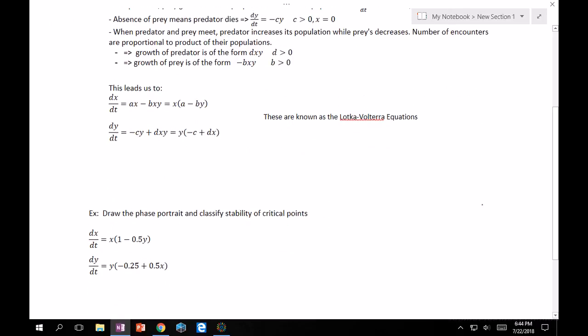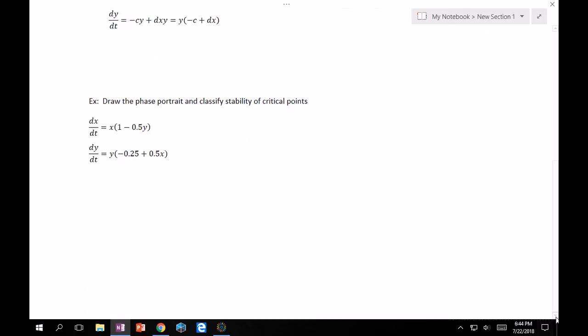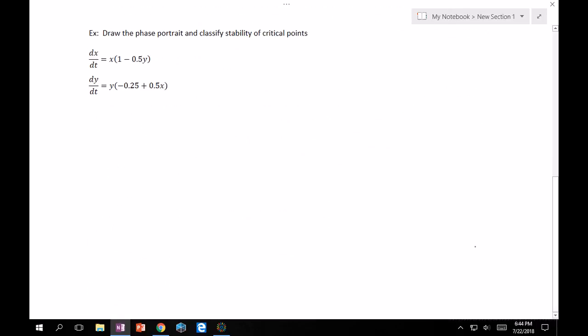And so all that's left to do is to do a problem to illustrate what the phase portraits for these kind of look like. So great, get started. Again, recommended that you multiply these out, so the top one would be equal to X minus one-half XY. The bottom would equal minus one-fourth Y plus one-half XY in order to calculate your Jacobian. As always, find critical points. So again, I'm just going to give them to you. Feel free to calculate them on your own.